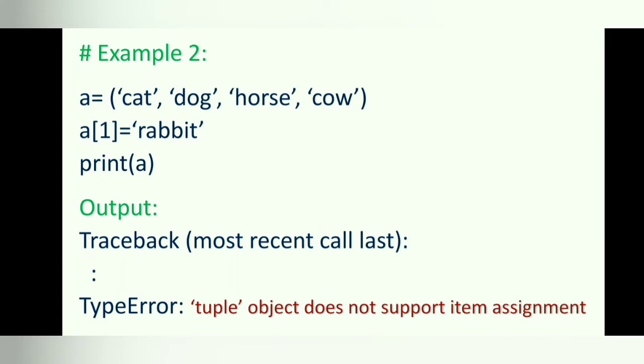Example 2: Let us try to modify a tuple. In this example, a tuple (cat, dog, horse, cow) is assigned to the variable a. In the following statement, we attempted to modify the tuple by assigning the value 'rabbit' at index position 1.